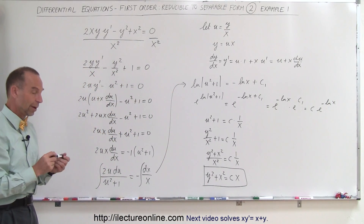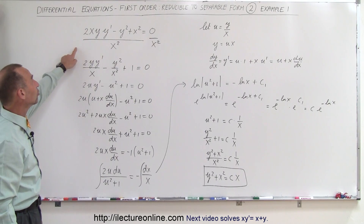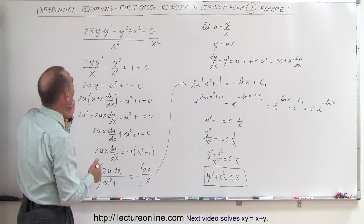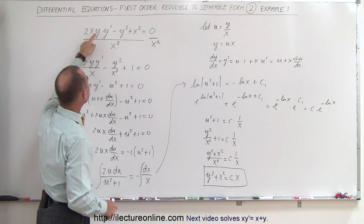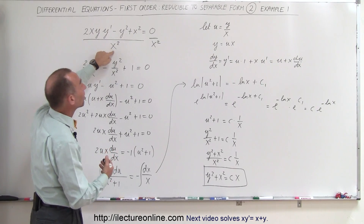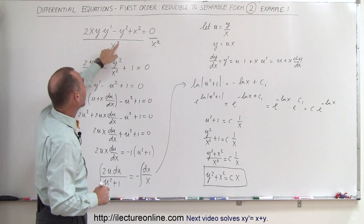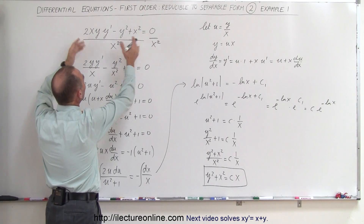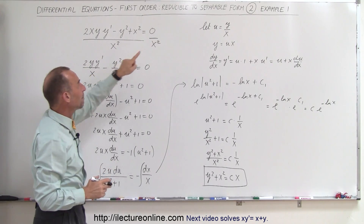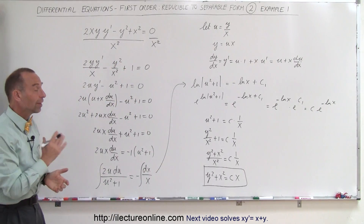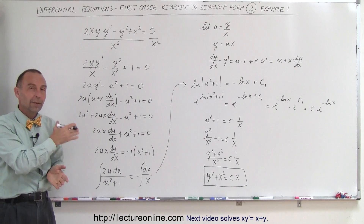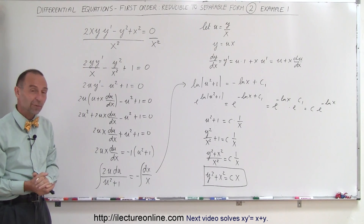That is the solution to the original differential equation, found simply by making the substitution u equals y over x. Remember, it doesn't always appear obvious, but if you see a y squared, an x squared, or an x times y, you can simplify by dividing both sides by x or x squared. Something that at first seems unsolvable becomes separable with this straightforward substitution — that's how we solve first-order differential equations that are not initially separable.